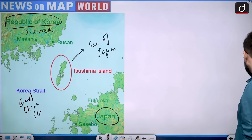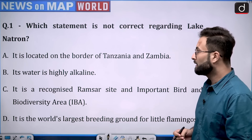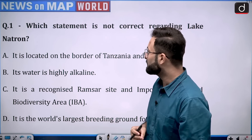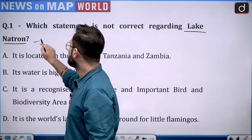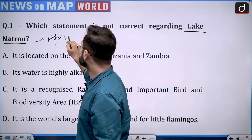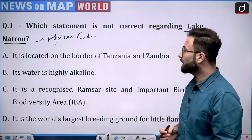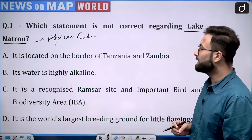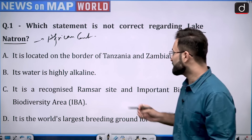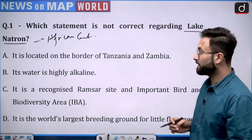Now we will move to question number one. The question is: which statement is not correct regarding Lake Natron? Option A is that it is located on the border of Tanzania and Zambia. Second is that its water is highly alkaline. Third is that it is a recognized Ramsar site and an important bird and biodiversity area. And D is that it is the world's largest breeding ground for little flamingos.